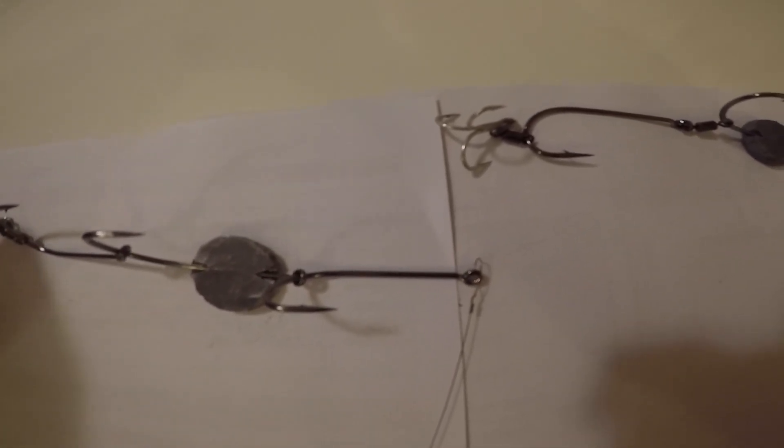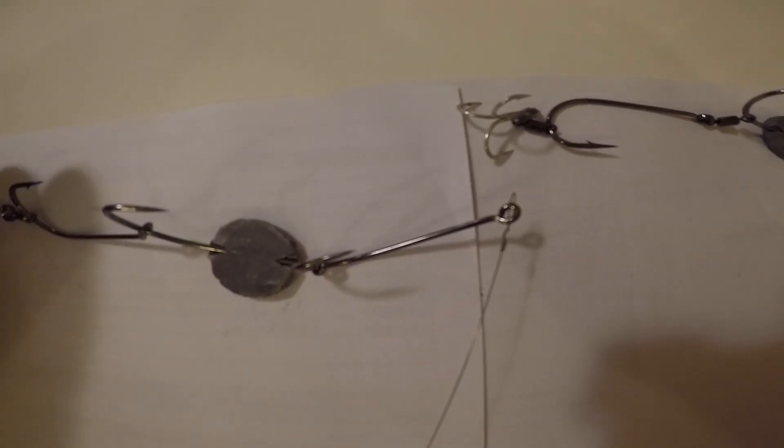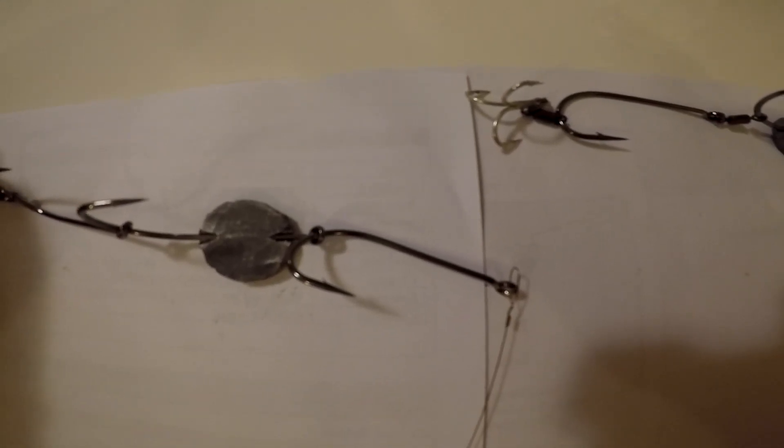You start from the back and work your way forward, line it up and work your way forward to the last hook. The front hook there pins it under the mouth, under the chin, out to the top. Try and get it nice and straight. Try and get the best quality baits that you can.